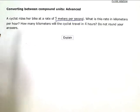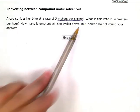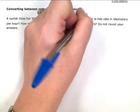What is this rate in kilometers per hour? How many kilometers will the cyclist travel in 4 hours? So I have two questions here that I have to answer.